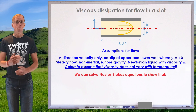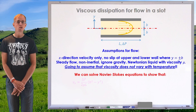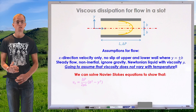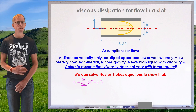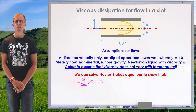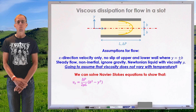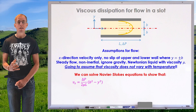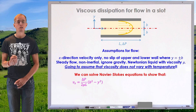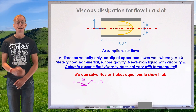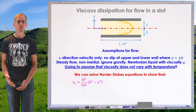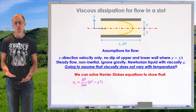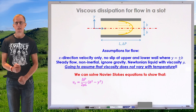So we've set up the Navier-Stokes equations and we can solve them — I'm not going to go through this as we did it in previous lessons. What we obtain is that the flow velocity vx is a parabola, it's a function of y squared. No surprises there.